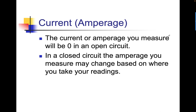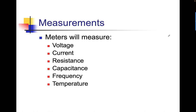Current is another measurement. The current or amperes you measure will be zero in an open circuit because there's no movement of electrons. In a closed circuit, the amperes you measure may change based on where you take your readings. But if you measure zero amps, there's no current flow — nothing is happening with the circuit. Most meters will measure voltage, current, resistance, capacitance, frequency, and temperature.